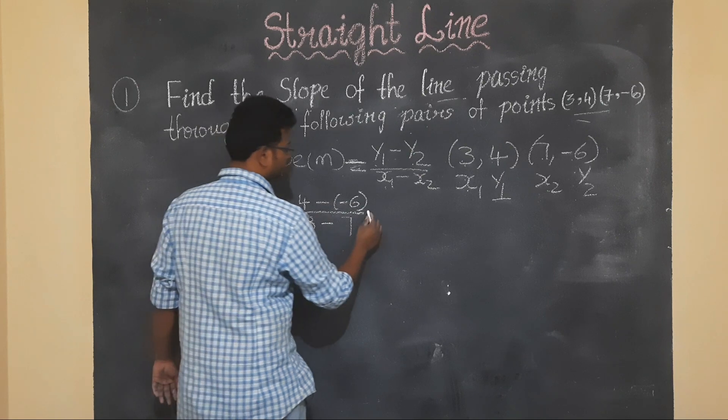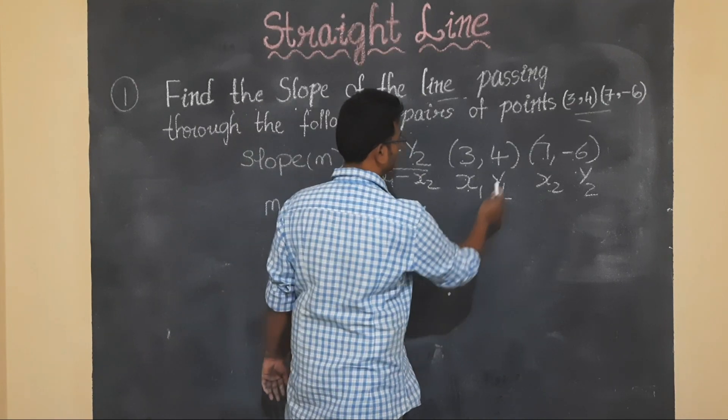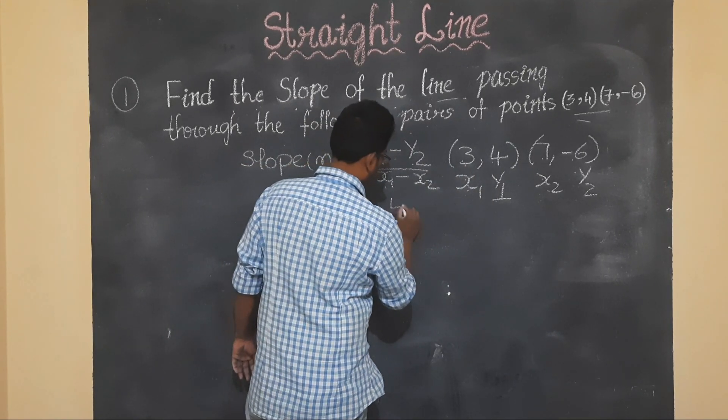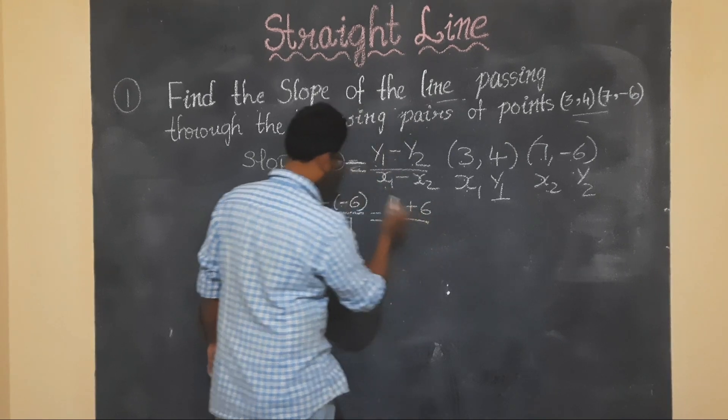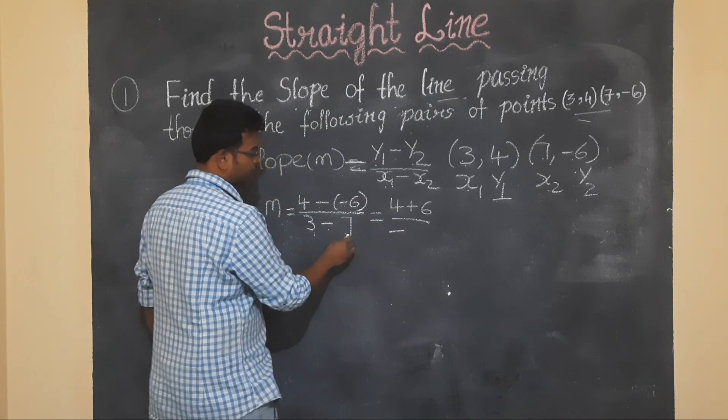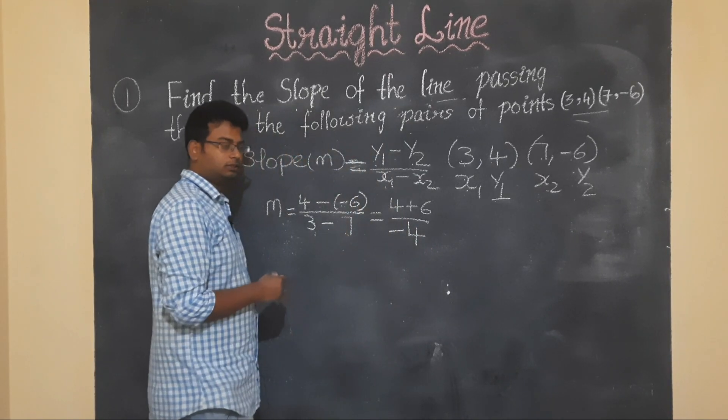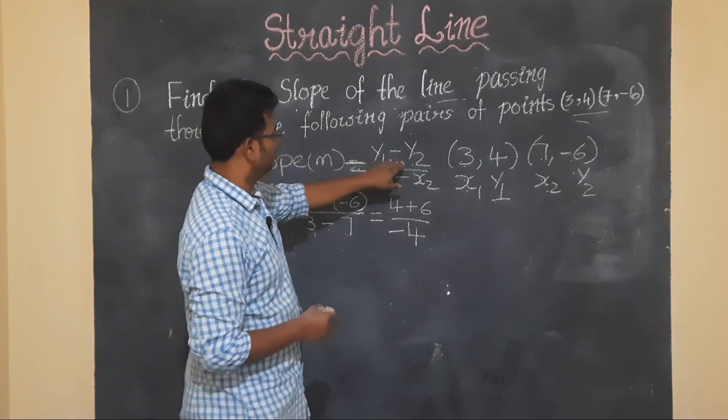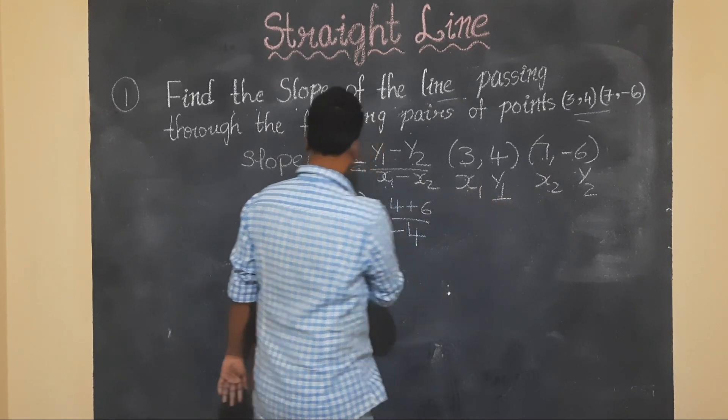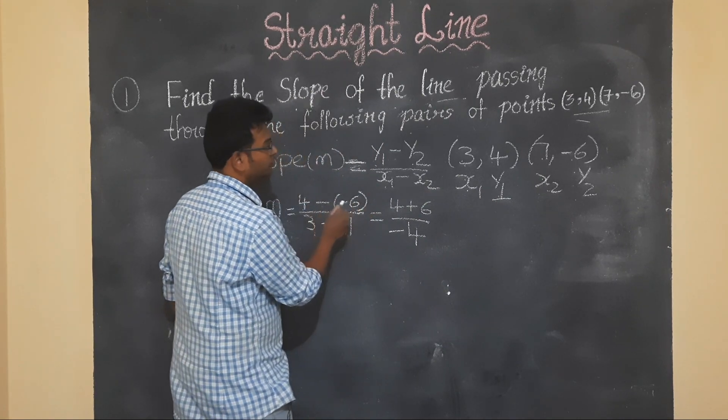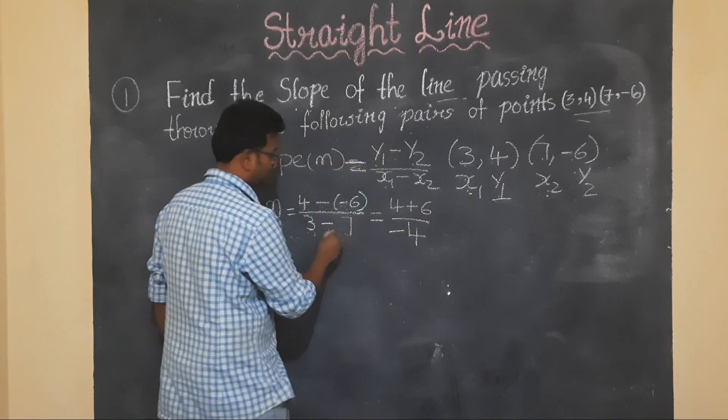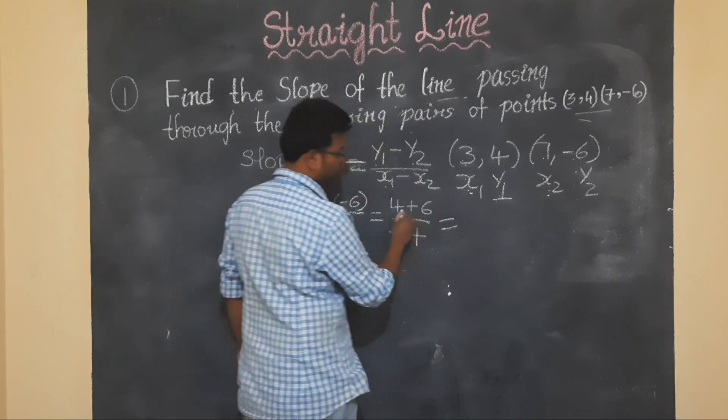Clear students? So first, 4 minus minus 6 by 3 minus 7. So 4 plus 6 by 3 minus 7. 4 plus 6 is 10, 3 minus 7 is minus 4.